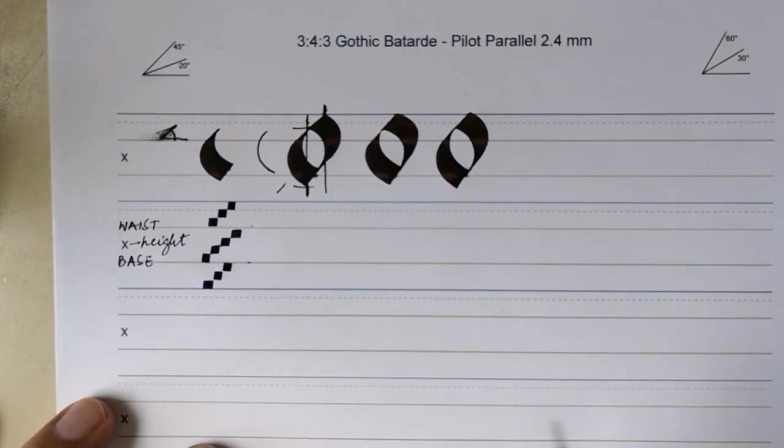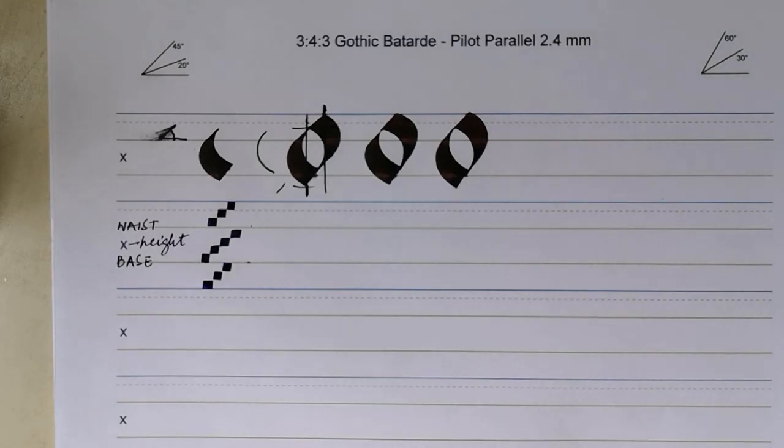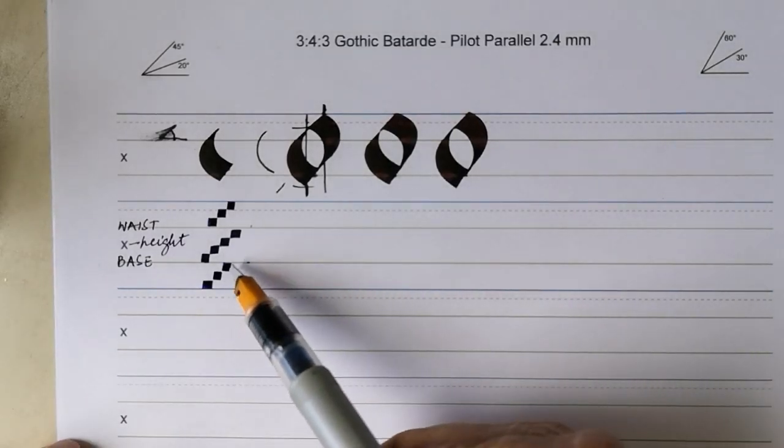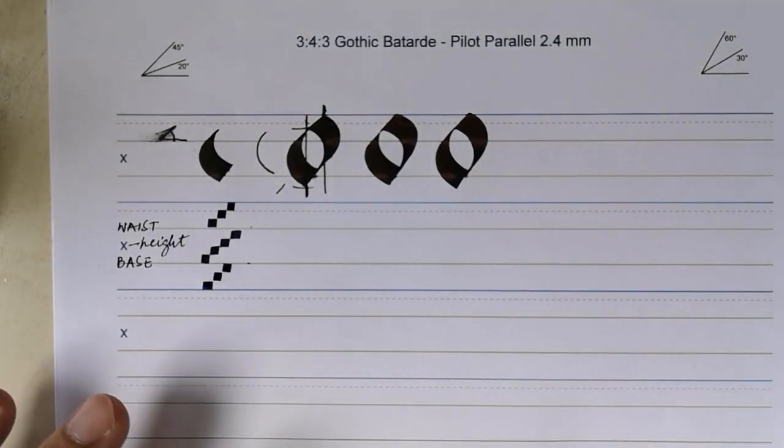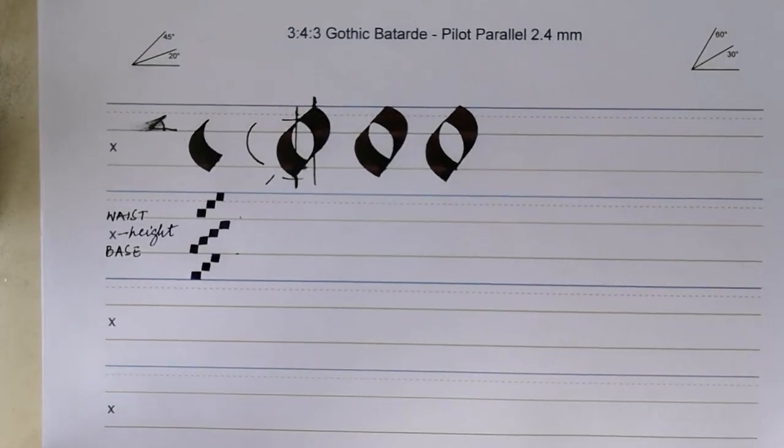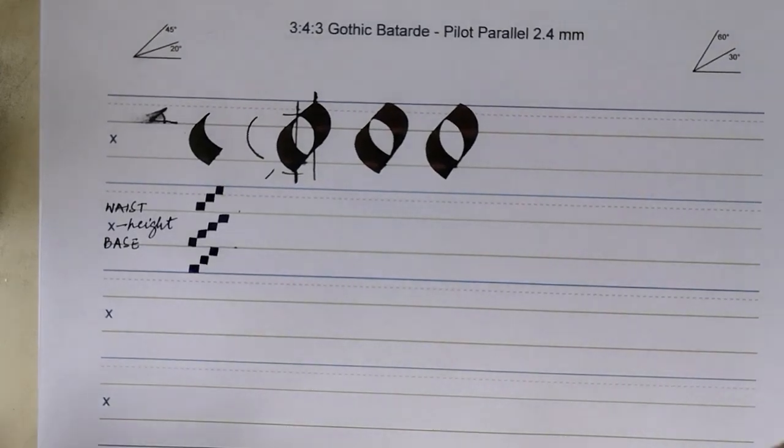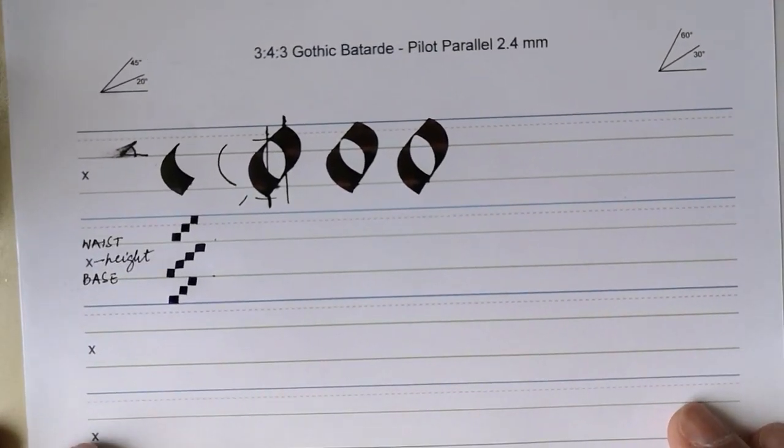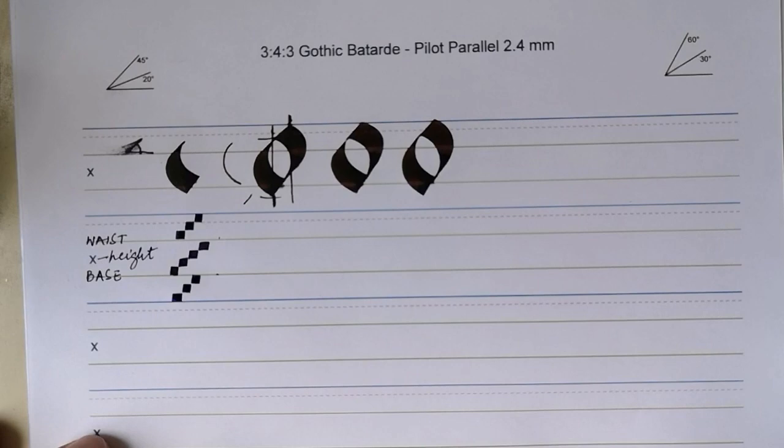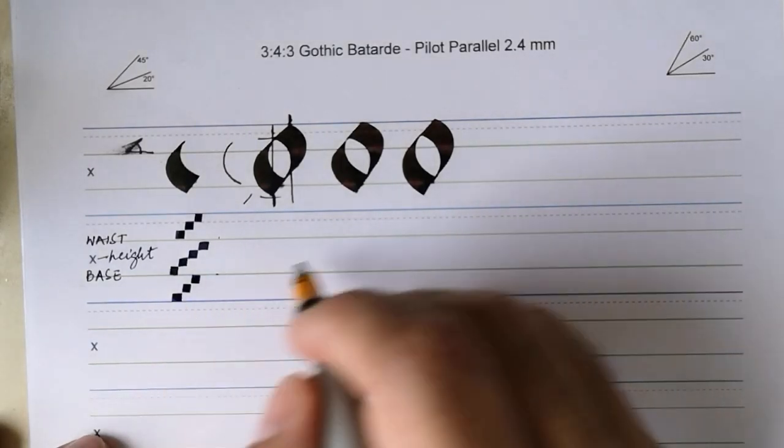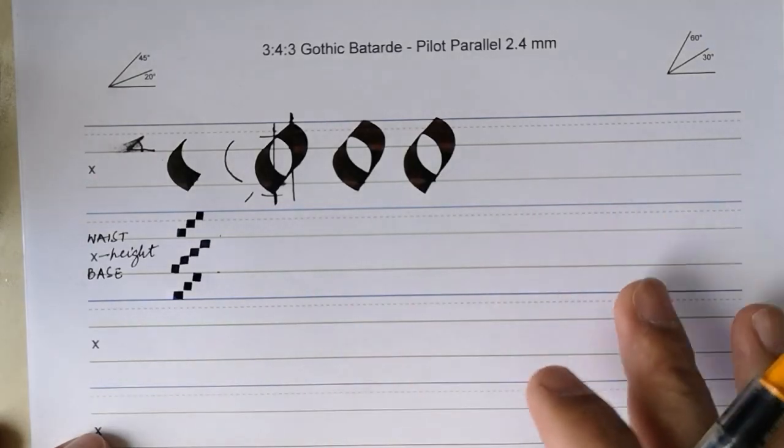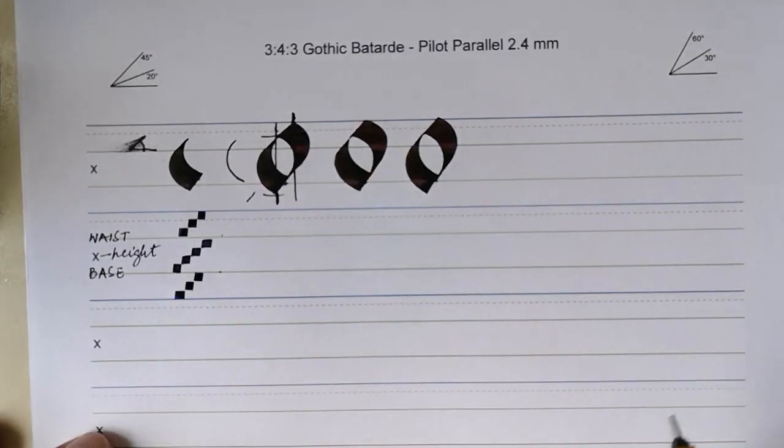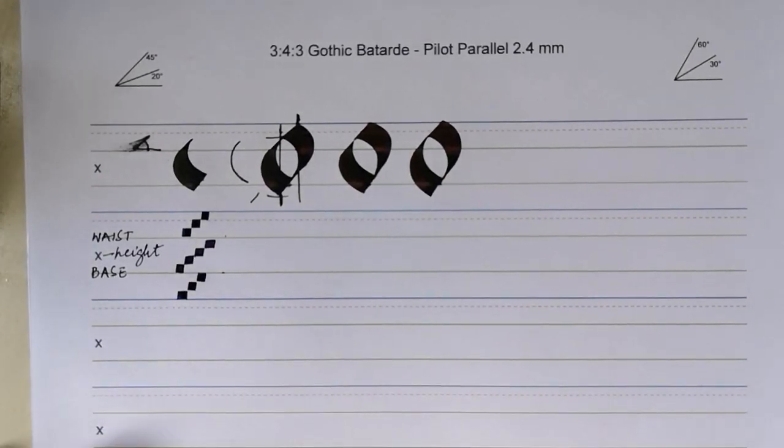Now once again I should mention that historically gothic batard is a very compressed script and the body is usually about three nib widths tall but that's kind of tight and we can always try different proportions and towards the end of these lessons we will actually do some exercises with more condensed both x height and spacing. But for the initial phases I would recommend this kind of generous spacing and x height.